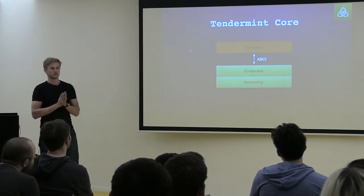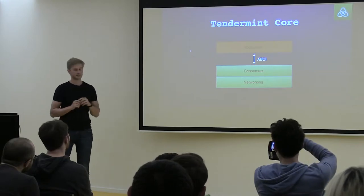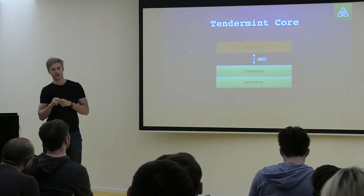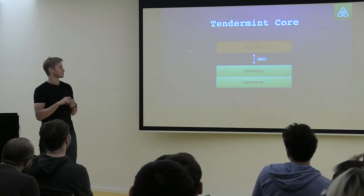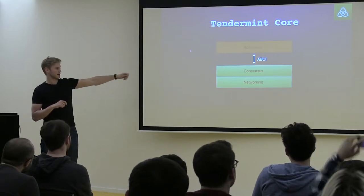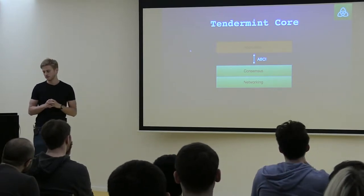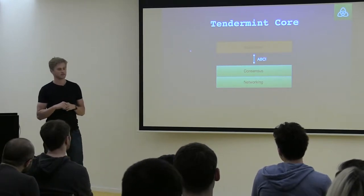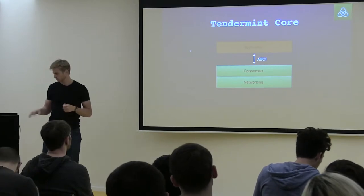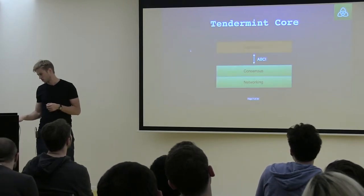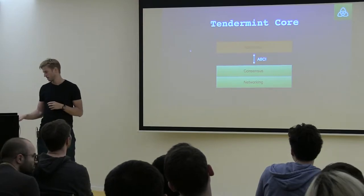Tendermint has a different approach. One of the core ideas of Tendermint was to separate networking and consensus — which is Tendermint Core — and then have basically an API interface called ABCI, the Application Blockchain Interface. You write your application on top, using the API to get data and write data from the consensus and blockchain layer. This gives a clean separation: if you write an application, you don't have to care about the underlying stuff.